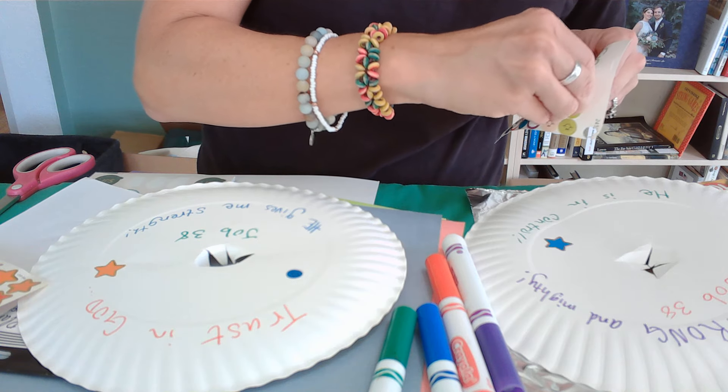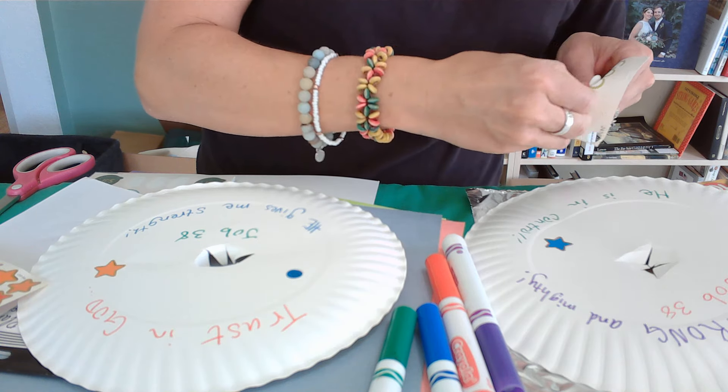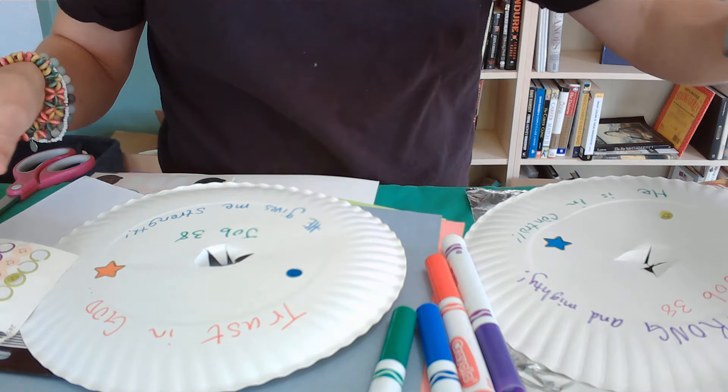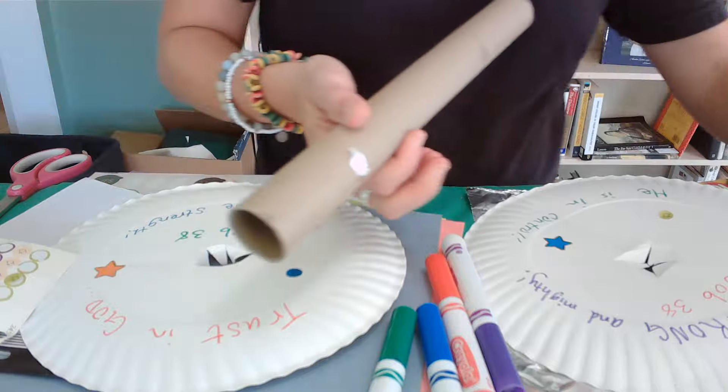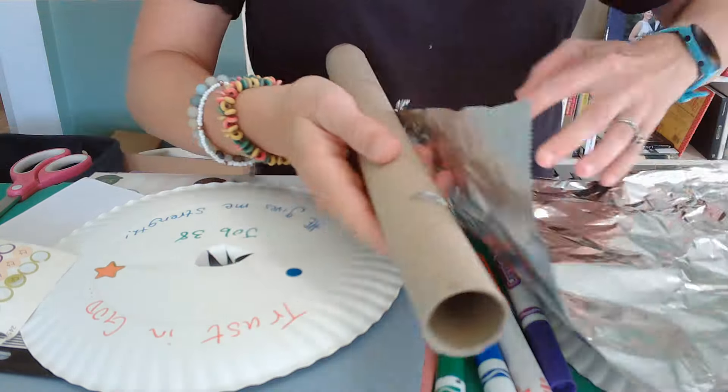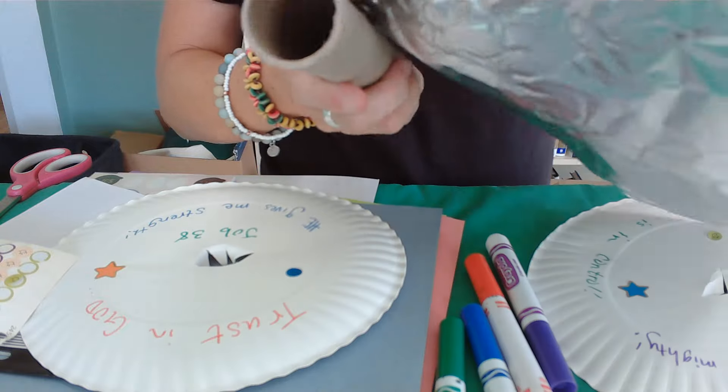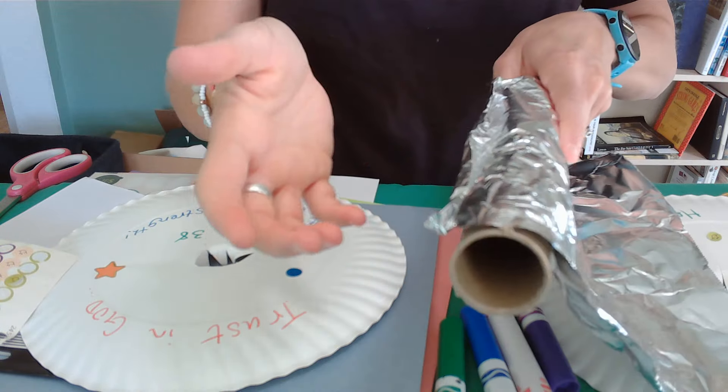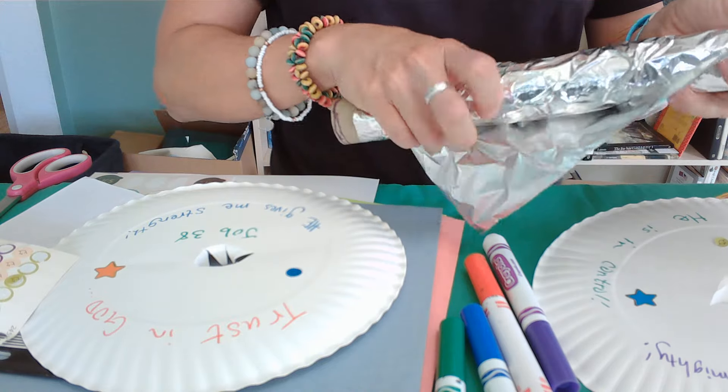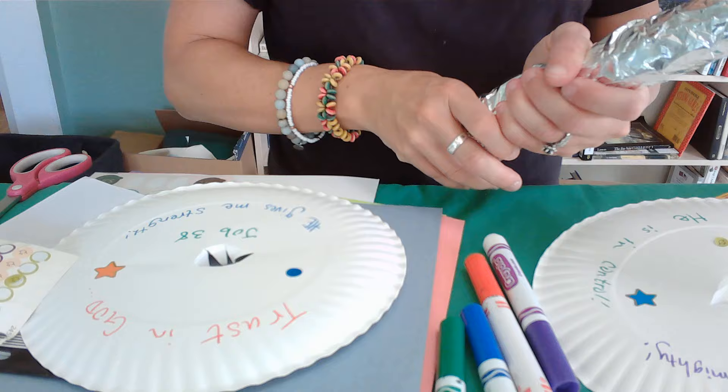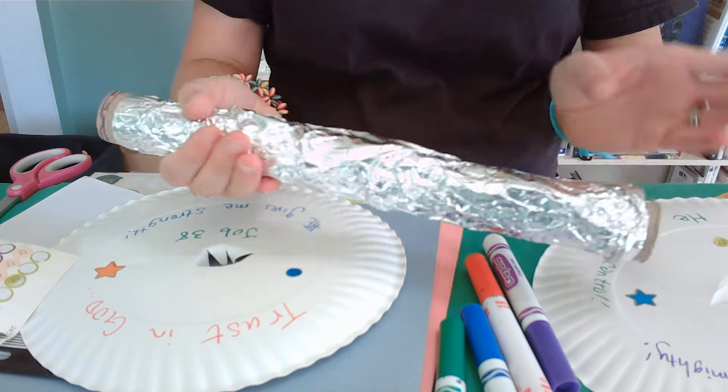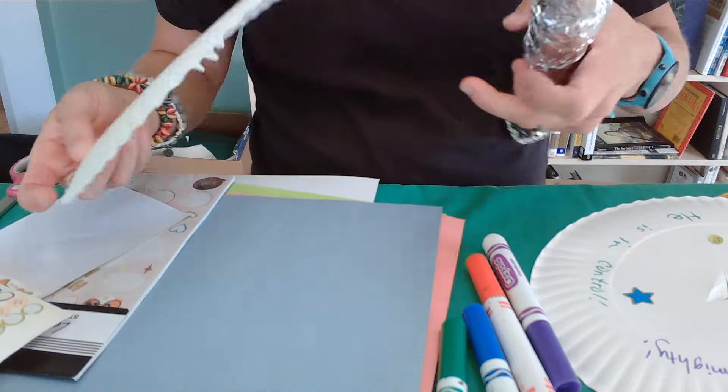So after I have written on, decorated, etc. my plates, now it's time to put it together. So for fun I'm going to add aluminum foil around my tube here to create that illusion that it's a barbell. You know, make it look kind of metal-ish. Then I'm going to attach my plates.